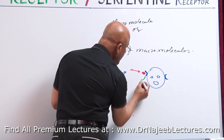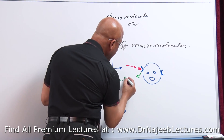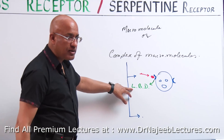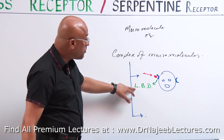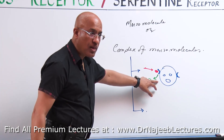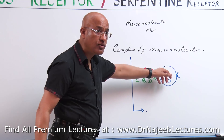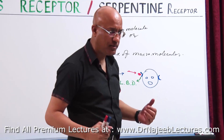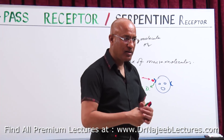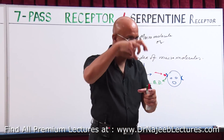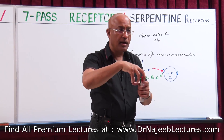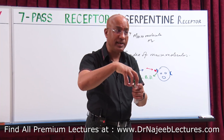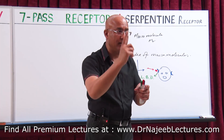How do we define a ligand? A ligand is a substance which binds with the receptor, specifically at the ligand binding domain.